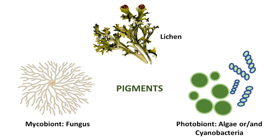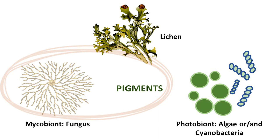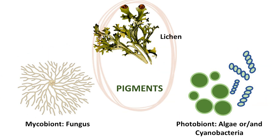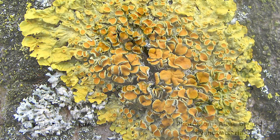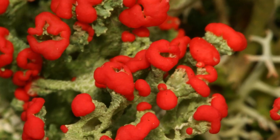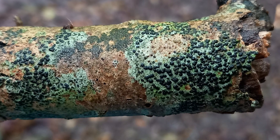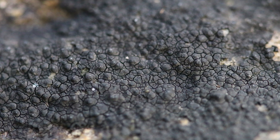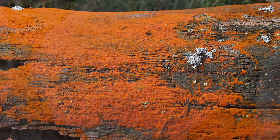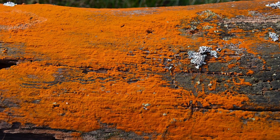The uniqueness of lichens lies in their production of a broad spectrum of pigments. Some pigments are produced by the fungus, others by the photobionts, and some are unique to lichens as composite organisms. Of course, it's impossible to describe all the pigments found in lichens because there are so many. Therefore, I have chosen some of the most representative pigments for the main colors you may see around.